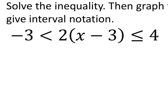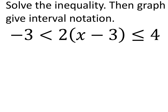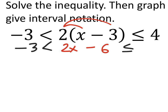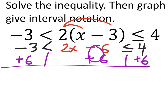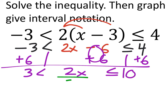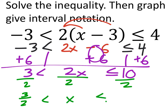The last problem asks for both graph and interval notation and has distribution. Distribute the two: 2x - 6, so -3 < 2x - 6 ≤ 4. Add six to all three parts: negative three plus six is three, less than 2x, less than or equal to ten. Divide all terms by two — positive, no flip: three-halves < x ≤ 5.